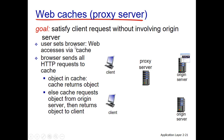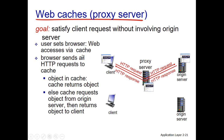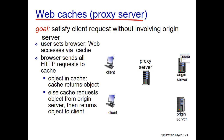The user sets the browser to access the web via cache. The browser sends all HTTP requests to the web cache. If the requested object is in the cache, it returns the object; otherwise the cache requests the object from the original server and then returns it to the client.